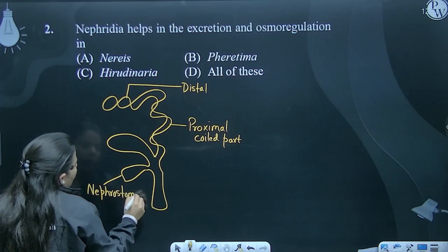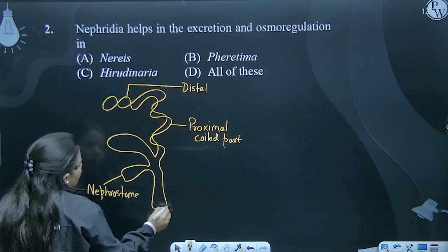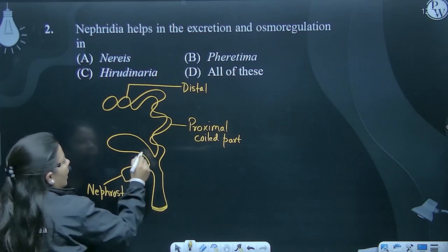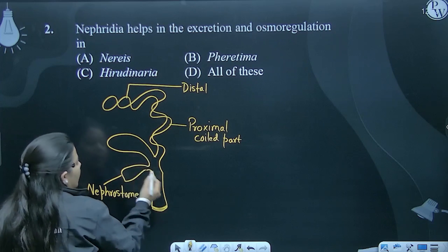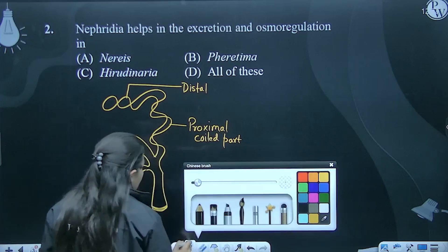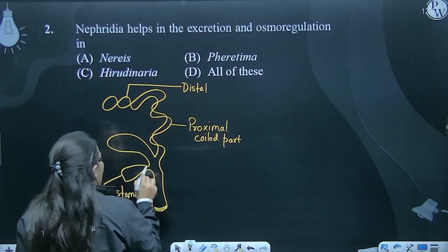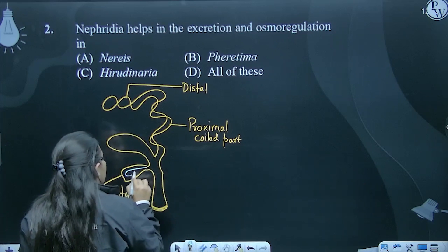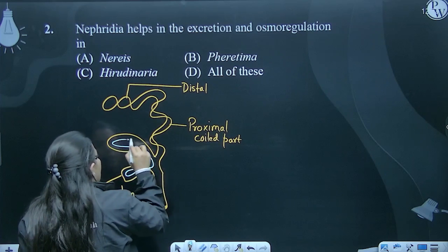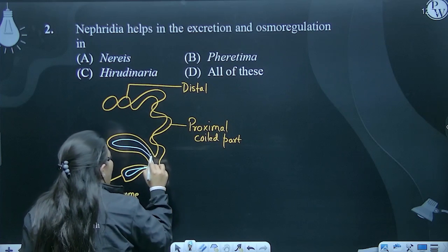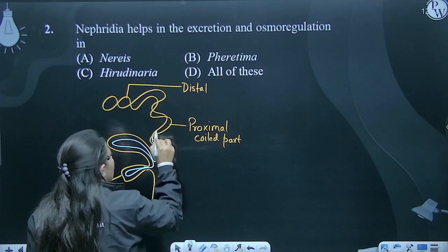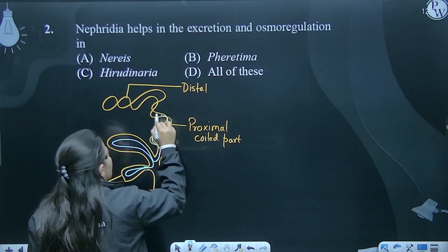And this becomes the anus part of it — basically the end part, or end sac. Inside this, there are many structures present, and this is present throughout in this manner.